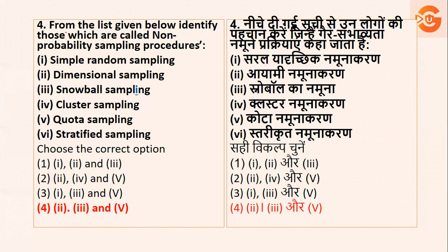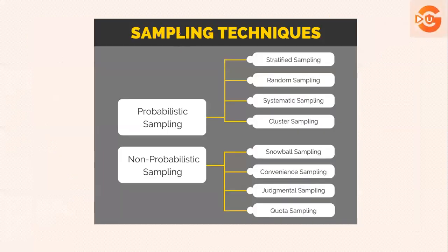Next question: aapko find out karna hai non-probability sampling. Sampling techniques divide hoti hai two parts mein — A: probability, and B: non-probability. Probability ke types hain: stratified, random, systematic, cluster. Non-probability ke types kya hai? Snowball, convenience, judgmental, quota.